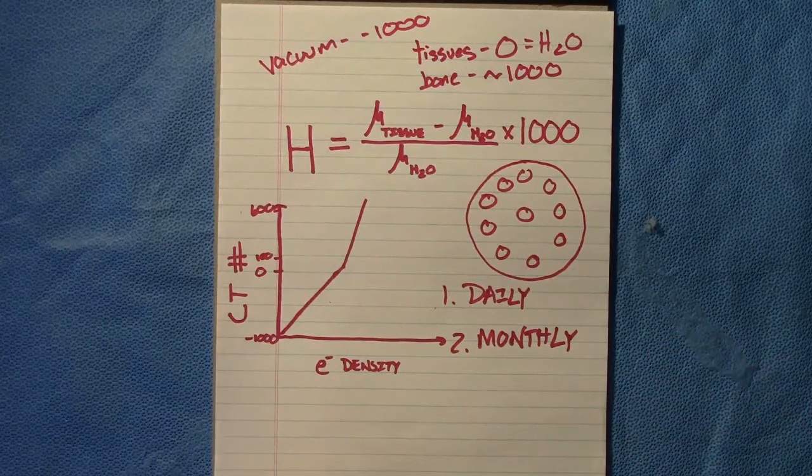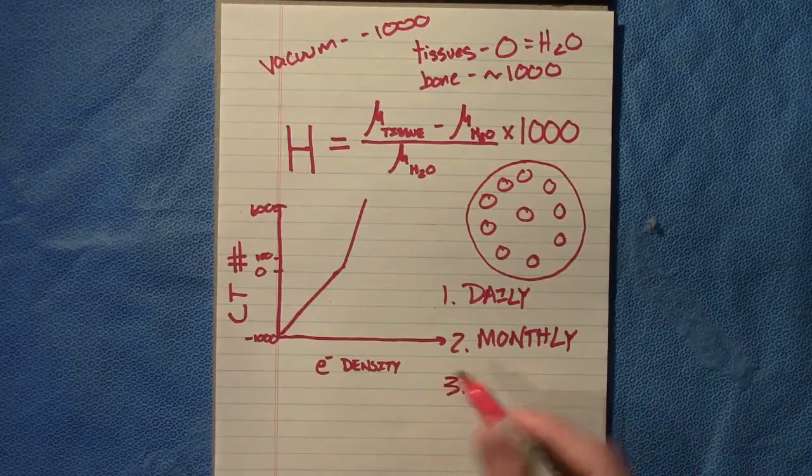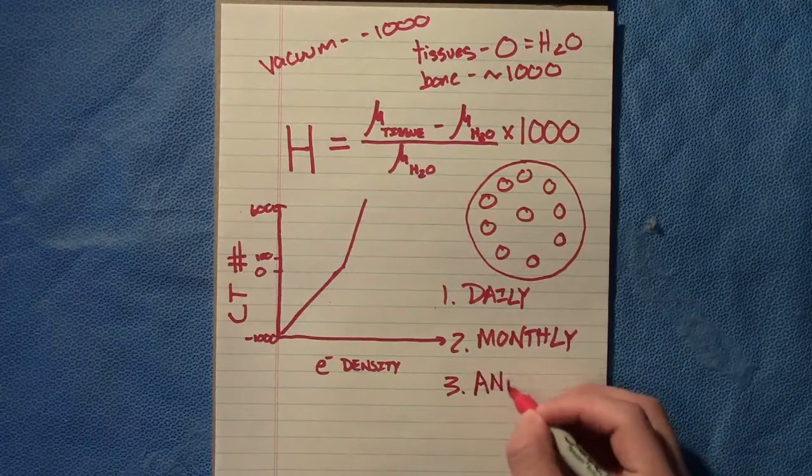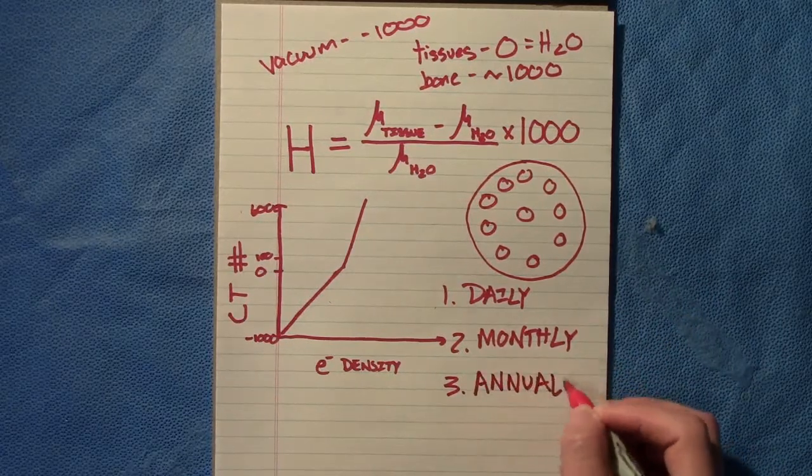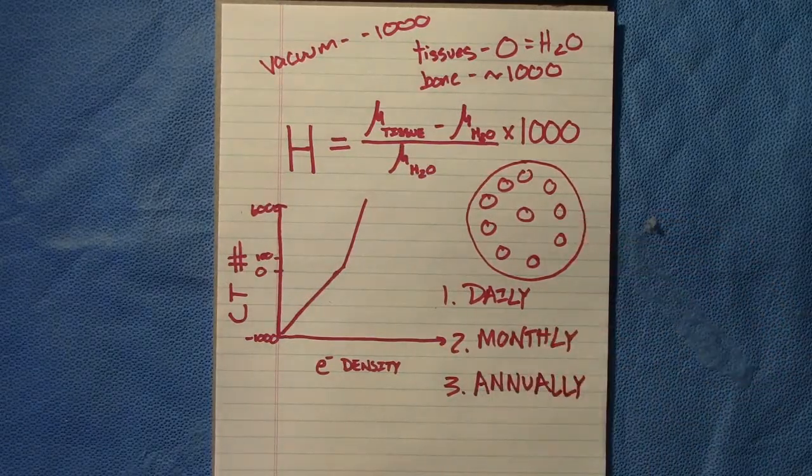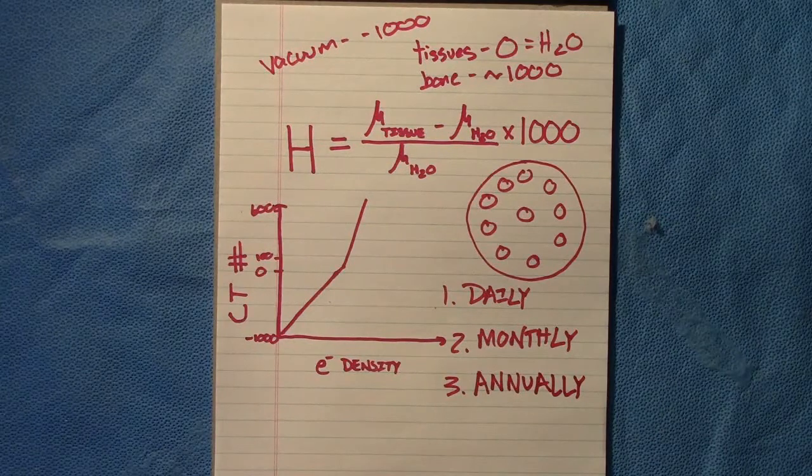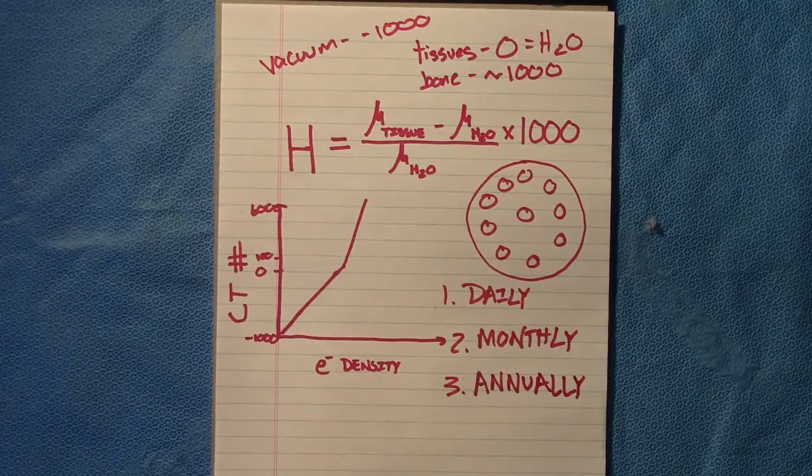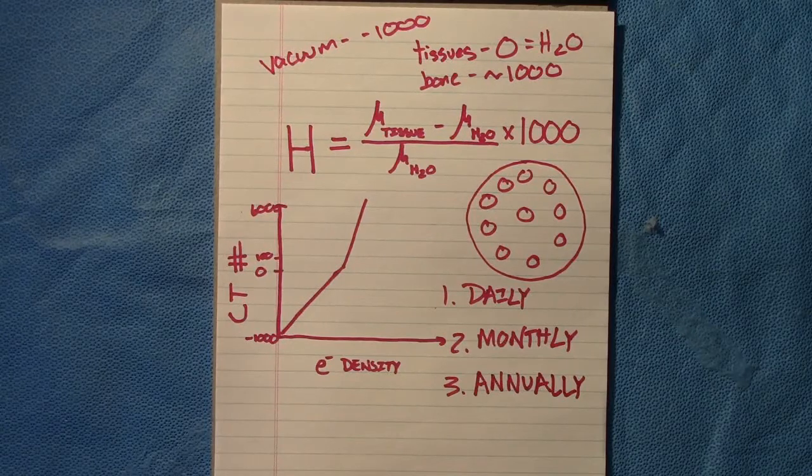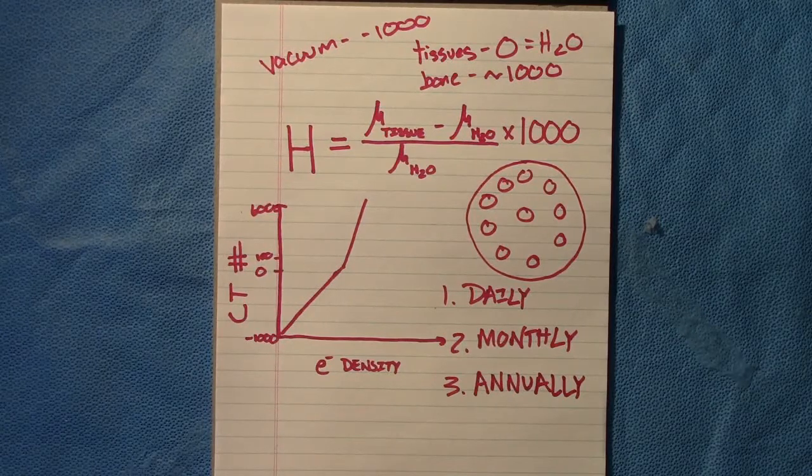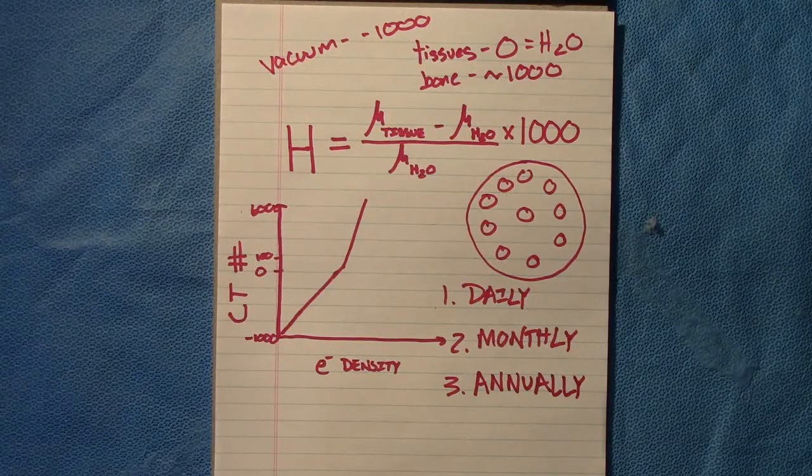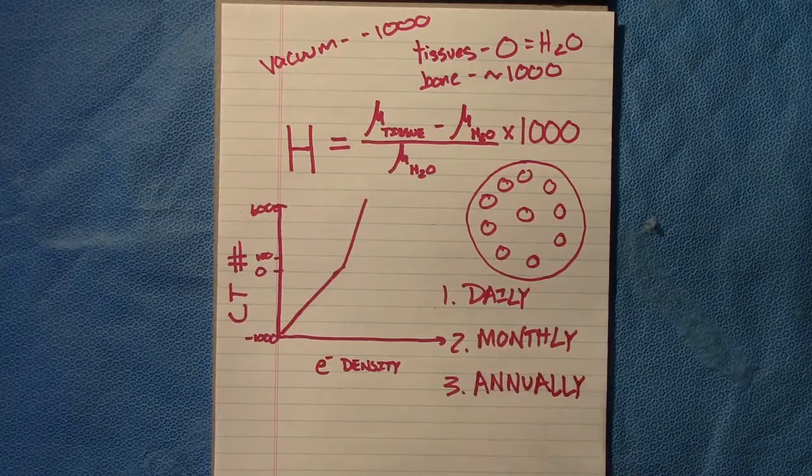And finally, annually, what you're going to want to do is actually take this Gammex phantom, completely scan it again, and verify that your electron density curve hasn't changed. Again, sometimes there's drift or different issues that you may need service for, but typically I've never seen one be off. However, you definitely need to test that annually because it is such a crucial step in radiotherapy.